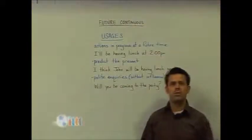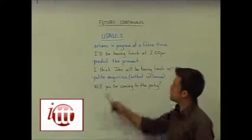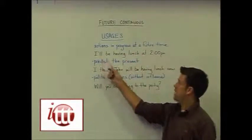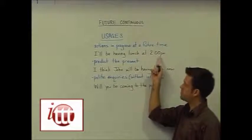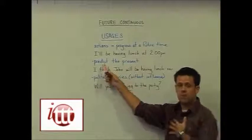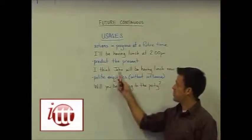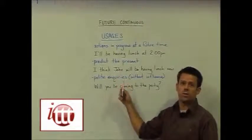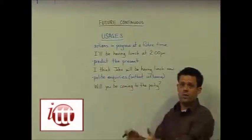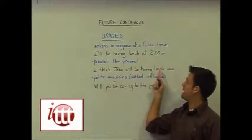Some of the more common usages for the future continuous tense are as follows. We can use it to speak about actions in progress at a future time, such as: I'll be having lunch at 2pm. We can also use it to predict the present. Because we're predicting, we wouldn't often predict something about ourselves — so perhaps somebody has asked about a gentleman John and his whereabouts. You're not sure, but you predict it using the future form: I think John will be having lunch now.